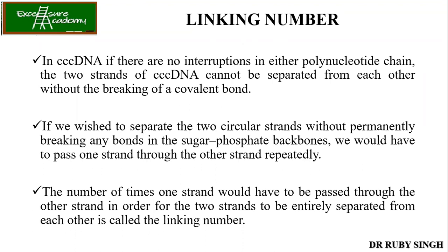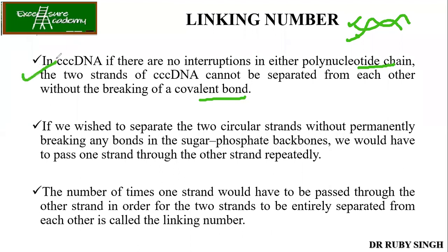This brings us to the linking number. In covalently closed circular DNA (CCC DNA), if there are no interruptions in either polynucleotide strand — meaning in both strands the phosphate backbone is intact — then the two strands of DNA cannot be separated from each other without breaking a covalent bond. If we wish to separate the two circular strands without permanently breaking any bonds, we would have to pass one strand through the other strand repeatedly.